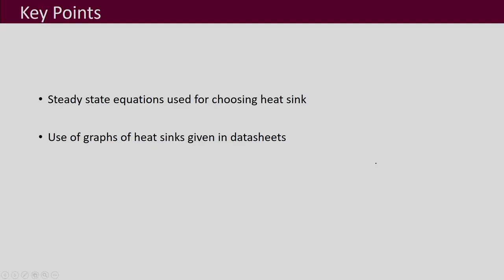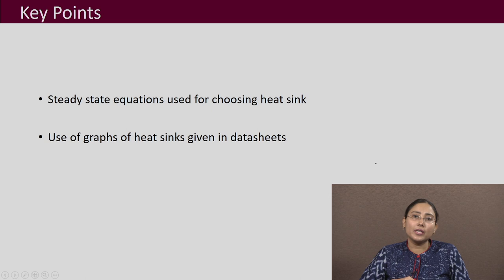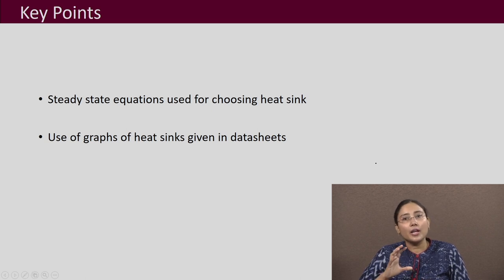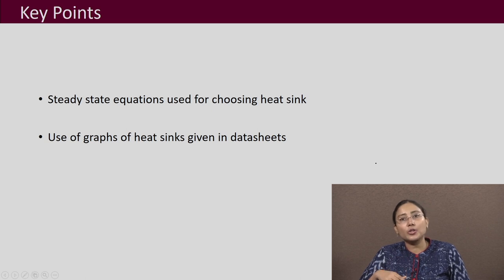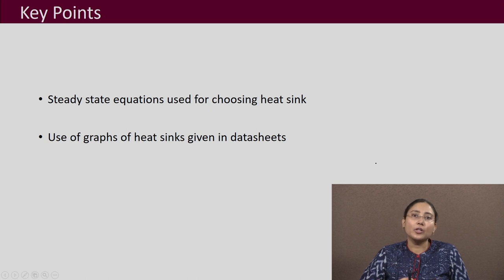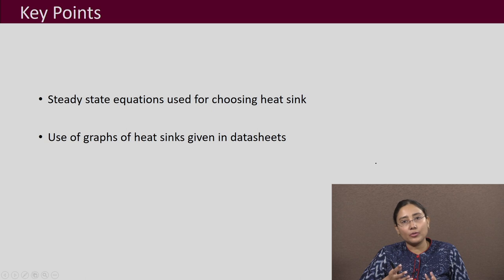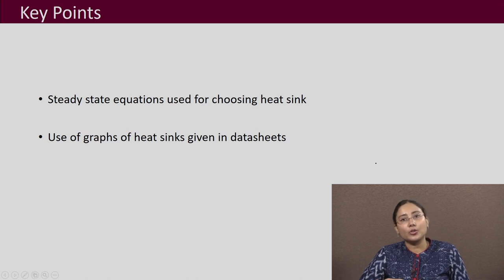The key points of this lecture: steady-state equations are most commonly used for heat sink selection. Manufacturers provide graphs of temperature rise vs. power dissipation (for natural cooling) and thermal resistance vs. air velocity LFM (for forced air cooling). Using these, you can determine the required heat sink thermal resistance and the necessary air velocity, then select the appropriate thermal design for your power electronic converter.